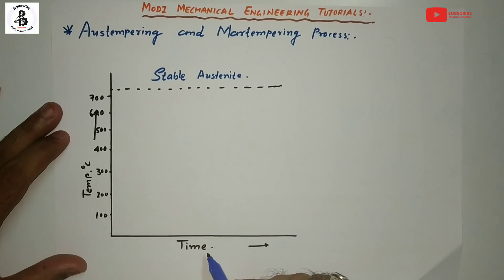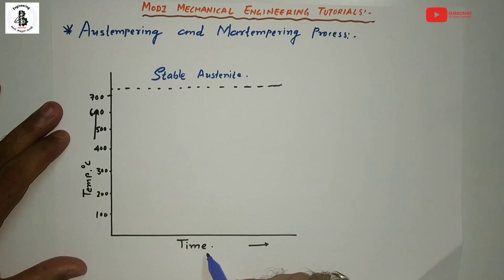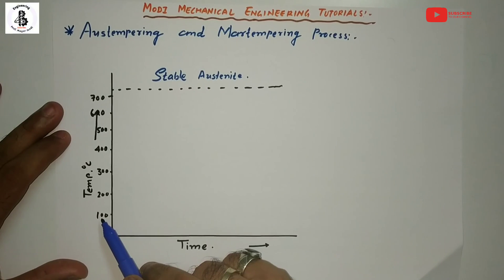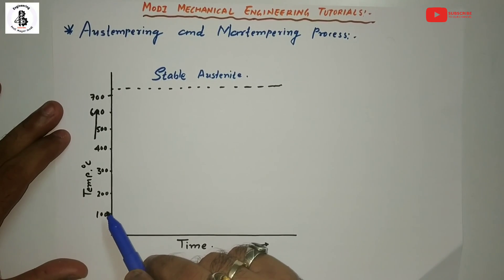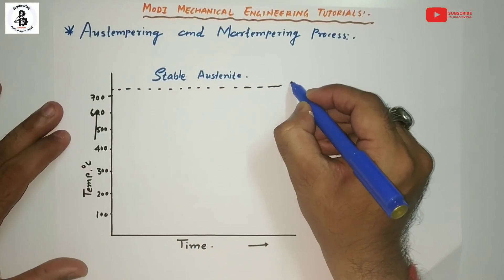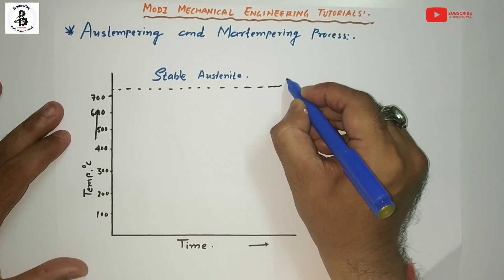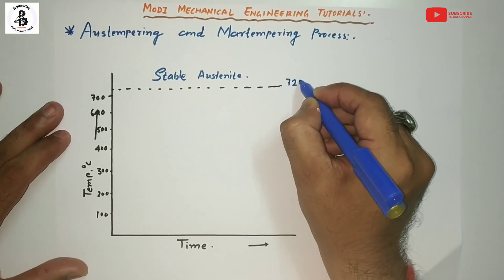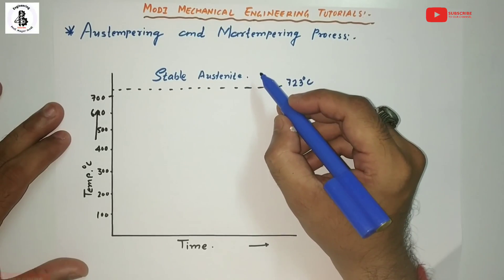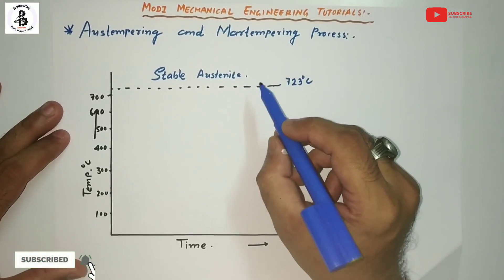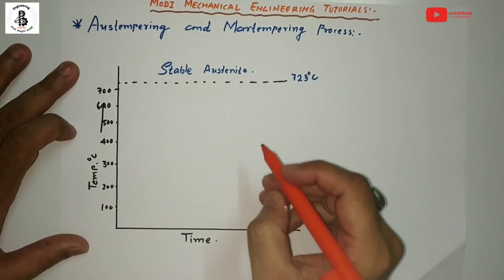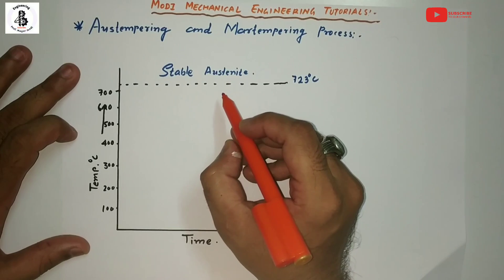On the TTT diagram, the x-axis represents time and the y-axis represents temperature in degrees centigrade. Our steel materials are heated above 723 degrees centigrade. As seen from the iron-carbon diagram, above this temperature it will be the formation of stable austenite.